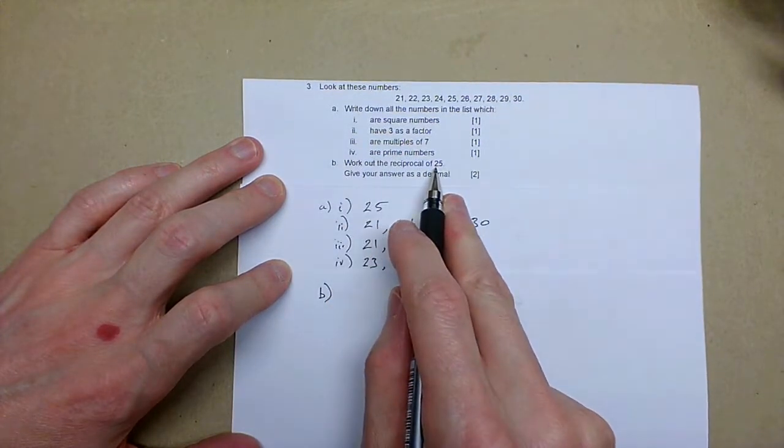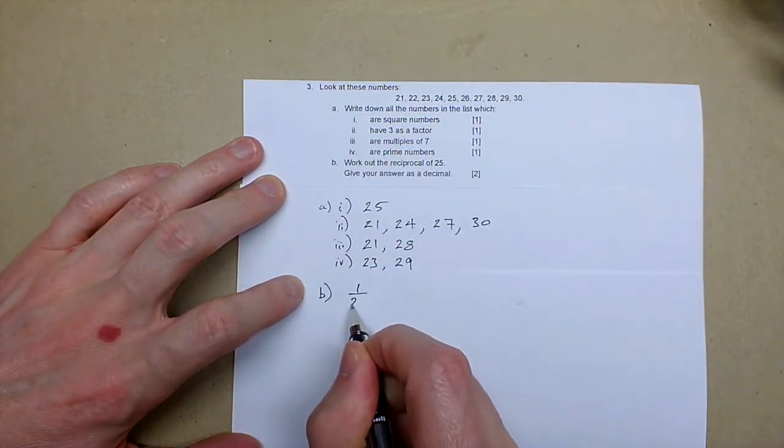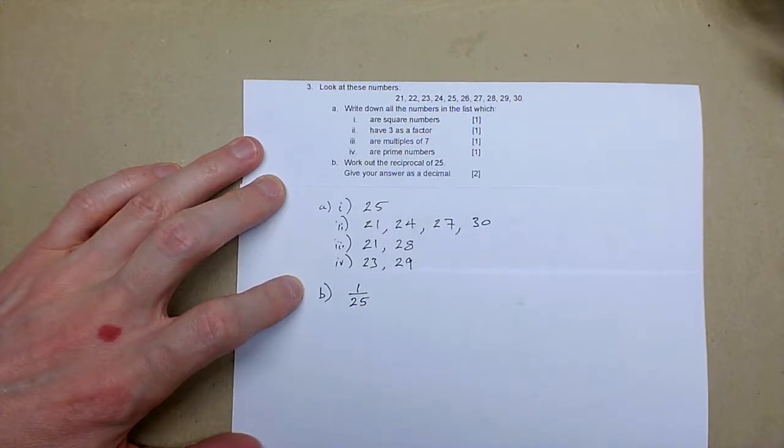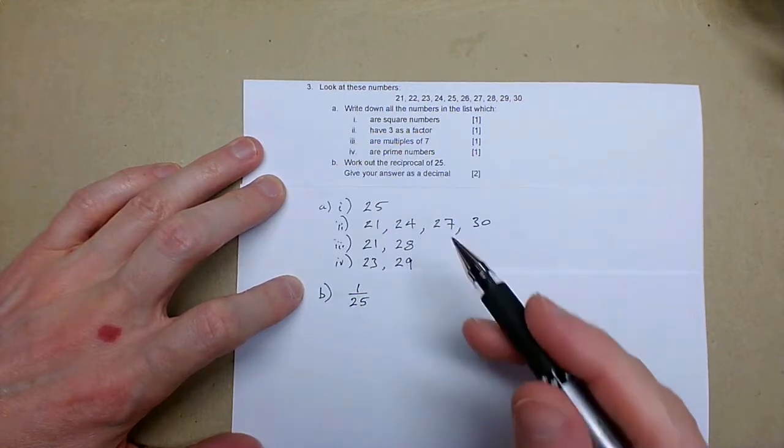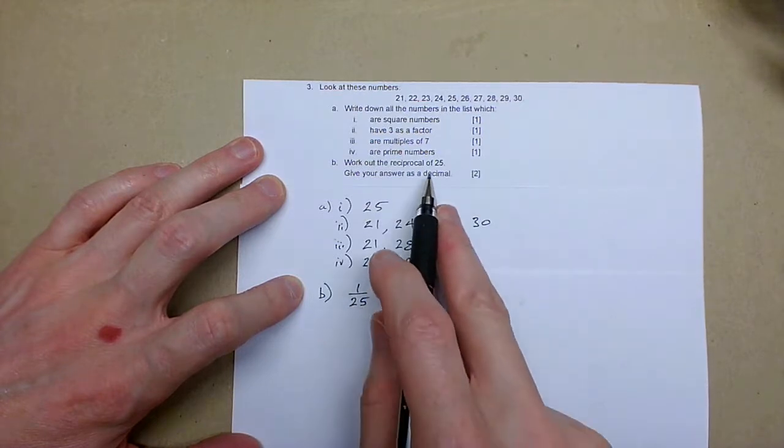Work out the reciprocal of 25, give your answer as a decimal. Reciprocal just means put it underneath one, if it's a fraction you turn it upside down, 25 you just make it one over 25, but they want their answer as a decimal.